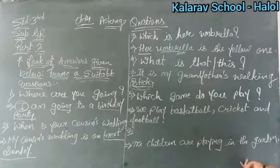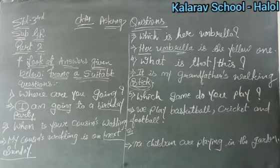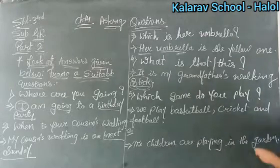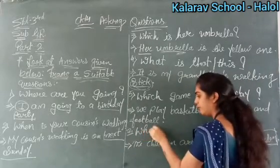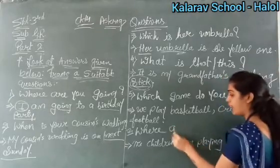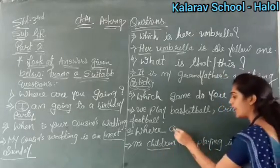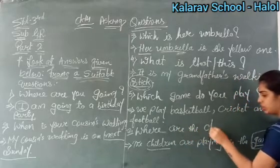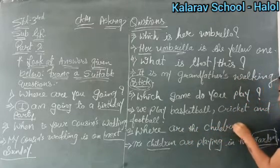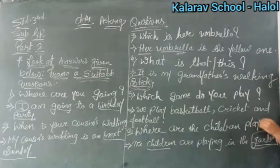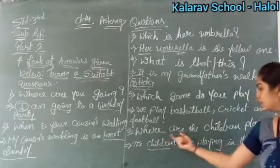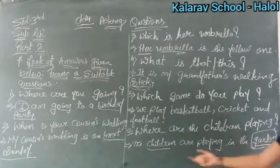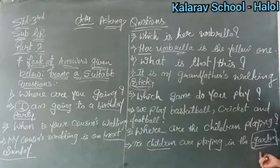Now see the sixth number. The answer is: 'The children are playing in the garden.' They are playing in the garden, so we are talking about a place. So what we use is 'Where.' Children is plural, so: Where are the children playing? Answer: The children are playing in the garden. Understood?